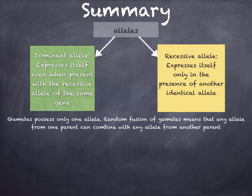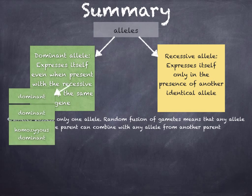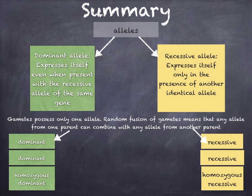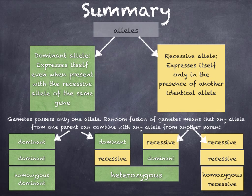The gametes possess only one allele, so random fusion of gametes means that any allele from one parent can combine with any allele from another parent. If you have two dominant alleles, we call that homozygous dominant. If you have two recessive alleles, we call this homozygous recessive. And if you have a dominant and recessive allele, we call this heterozygous. And that concludes our lesson.